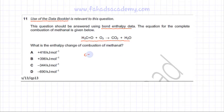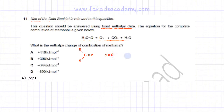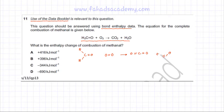Starting with methanol: it has a C double bond O, and this carbon is bonded to two hydrogens. Then you have an oxygen molecule, which has two oxygen atoms forming a double bond. The products are CO2, where one carbon forms double bonds with two oxygen atoms, and H2O, where one oxygen is bonded to two hydrogen atoms. So this is the reaction with the displayed formula of each compound drawn.